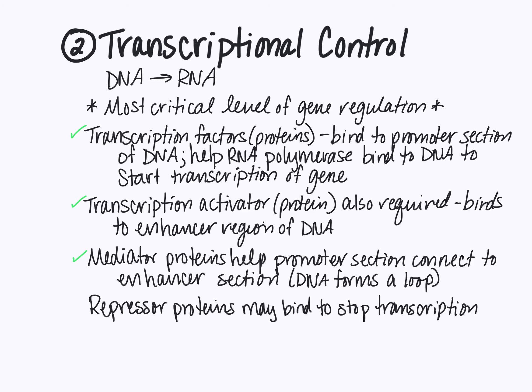The repressor proteins act as a kind of stop in order to slow down or stop transcription of the gene. It's also important to note that the production of these different proteins — the transcription factors, the activator, the mediator proteins, and the repressor proteins — may be determined by the expression of additional other genes. Genes provide the information needed to make a protein, and whether certain genes are turned on or off could be influenced by environmental factors. So an environmental factor may determine whether an activator or a repressor is being made, which would then control whether the gene is being transcribed or not.